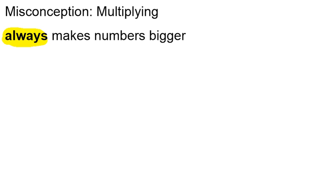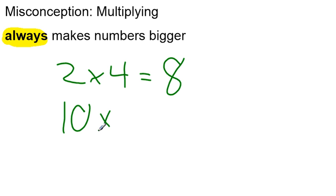When we start multiplying, we see that if we multiply 2 times 4, we get the bigger number 8. Or if we do 10 times, let's say, 12, then we get the bigger number 120. And we tend to start thinking that multiplying always makes things bigger.